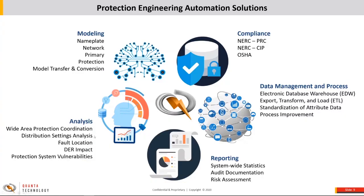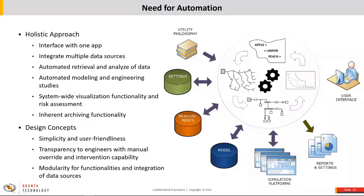Analysis — most of you are quite familiar with this — calculating SIRs, coordination or sensitivity of your settings, fault locations, impacts of DERs, and more. And modeling: you can update nameplate information automatically from other sources, your network and primary model as well as protection model, into Aspen OneLiner.